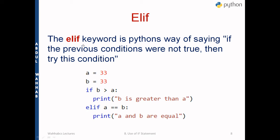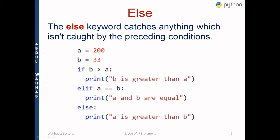'elif' is also a keyword, and all keywords must be written in lowercase because Python is a case-sensitive language. If the previous if condition was not true, Python will try the elif condition. For example, if b is not greater than a, it checks whether a is equal to b using the double equal sign. In this example, a is 33 and b is 33 as well, so the elif block prints 'a and b are equal'.